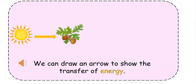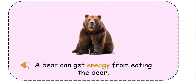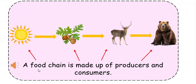We can draw an arrow to show the transfer of energy. A deer can get energy from eating the plant. A bear can get energy from eating the deer. This is called a food chain. A food chain is made up of producers and consumers.